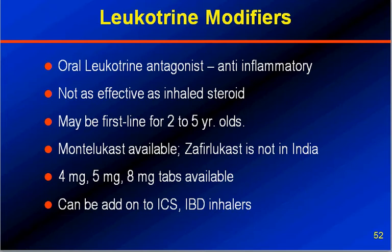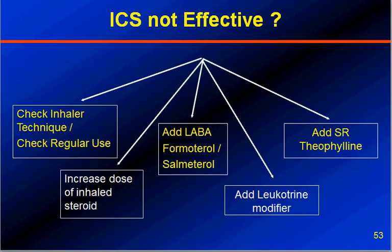These could be add-on drugs to inhaled corticosteroids and inhaled bronchodilators. Now, let's say we have started a patient on inhaled corticosteroids and he is not getting the response — attacks are not being prevented and he is getting recurrent episodes of bronchospasm. What could be the reason? Check the inhaler technique and check whether the patient is regularly using the prescribed inhaled corticosteroids. If that is the case, then increase the dose of the inhaled steroid.